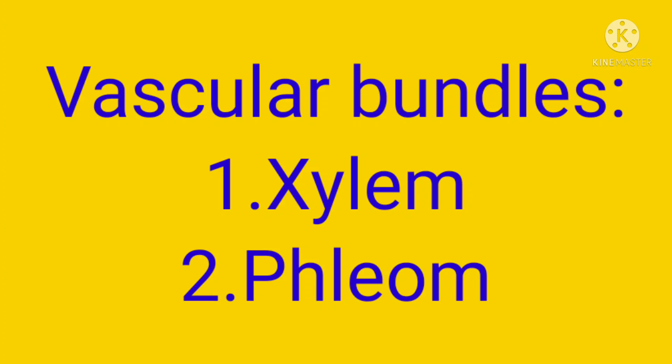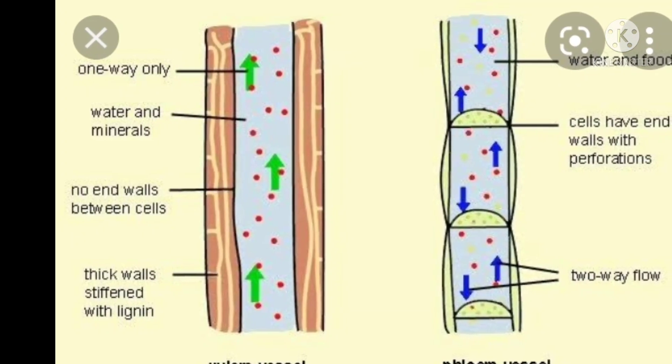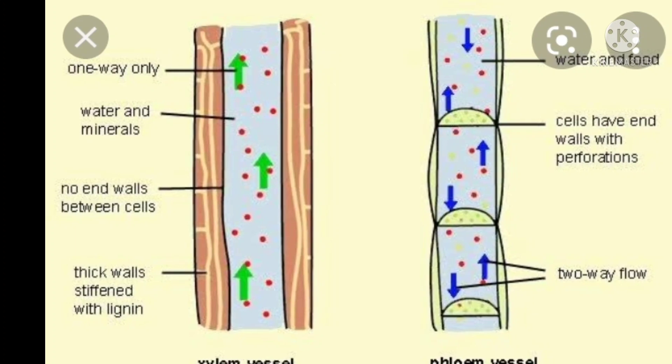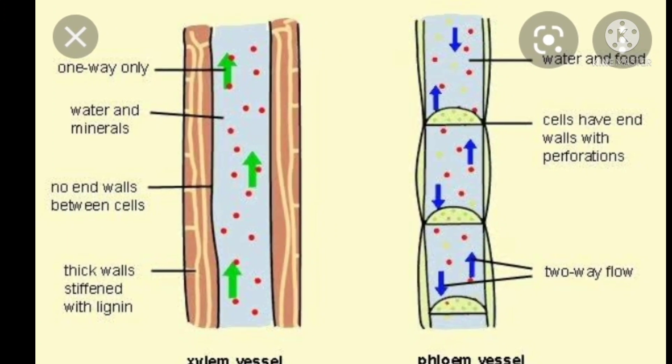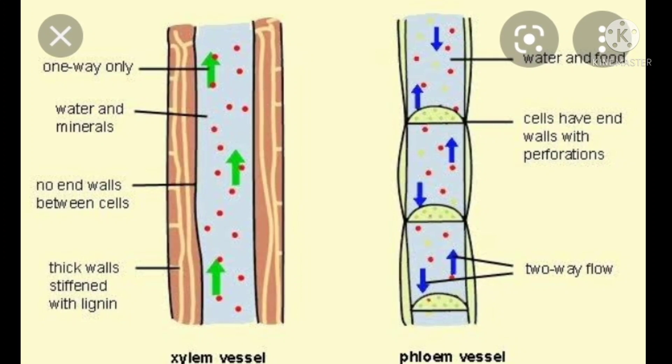Xylem transports water and mineral substances, and phloem transports food substances to all parts of a plant. Looking at the pictures, the first picture is xylem and the second picture is phloem.